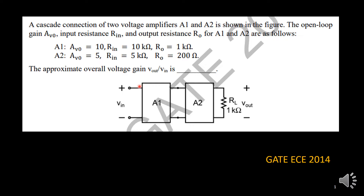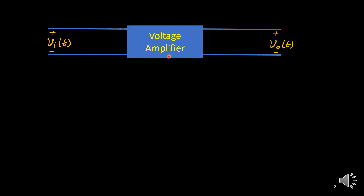Before solving, we need to understand the model for a single-stage voltage amplifier, which we discussed in a previous video. Here we will repeat it quickly. This is one voltage amplifier with input voltage VI and output voltage. The gain AV is the ideal voltage gain — meaning in no-load condition with no source connected, it is simply V0 upon VI.